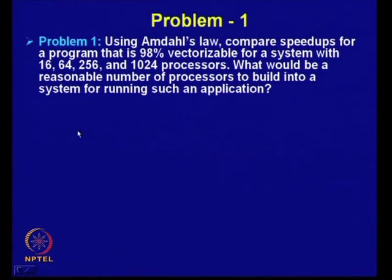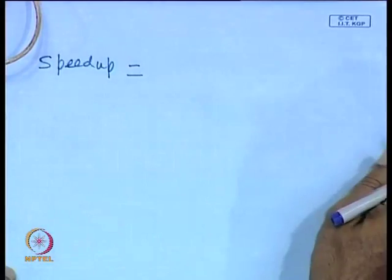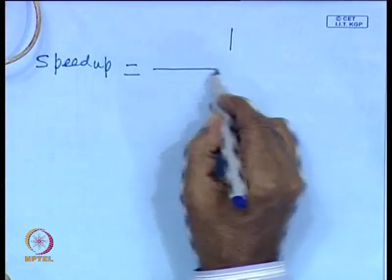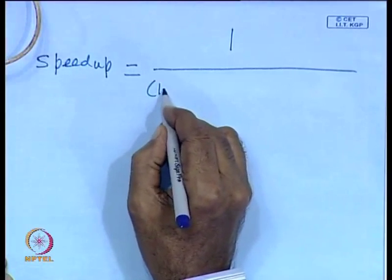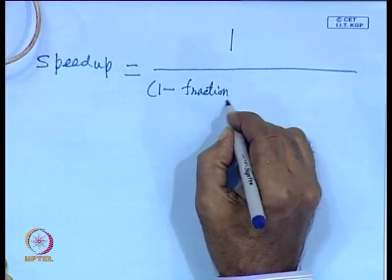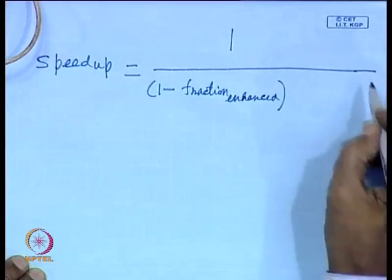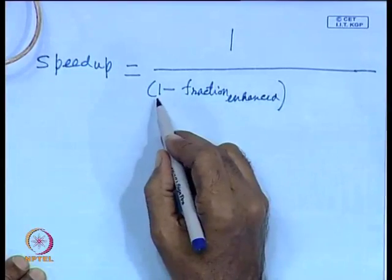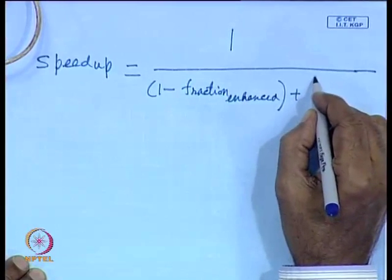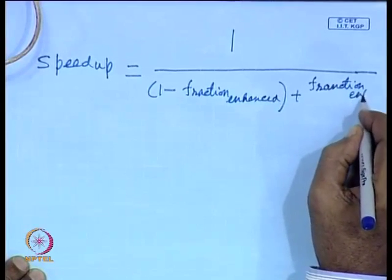The speed-up can be expressed as: speed-up = 1 / [(1 - fraction_enhanced) + (fraction_enhanced / speed-up_due_to_enhancement)]. A fraction of the program can be executed in enhanced form, so we have 1 minus fraction enhanced plus fraction enhanced divided by the speed-up because of enhancement.